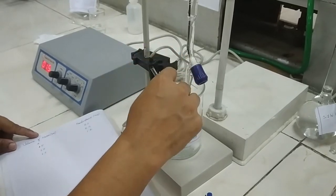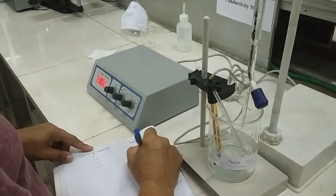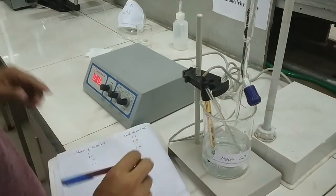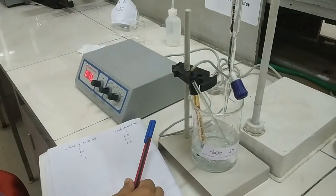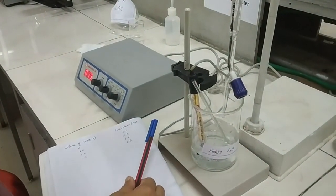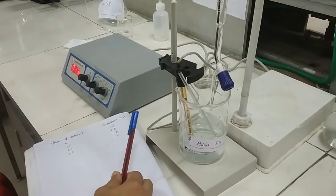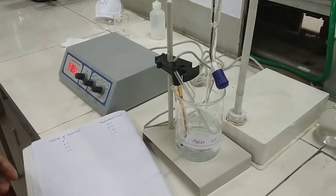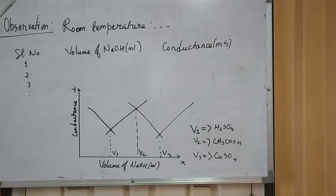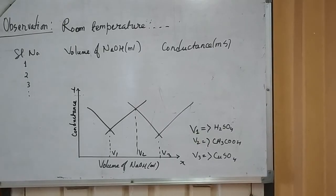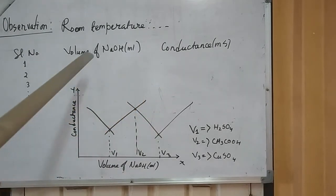In this way, we will repeat this process until there is a sharp increase or decrease in the conductance of the solution. After the completion of the experiment, we have to prepare an observation table.